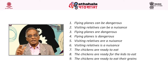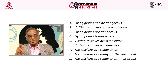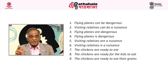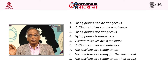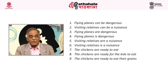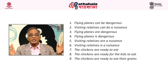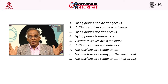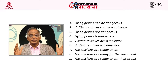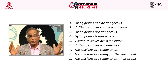Let's take another example: 'The chickens are ready to eat.' This sentence is also ambiguous — either the chickens are ready for someone to eat them, or the live chickens that are moving around are ready to eat their food. How can we make this sentence unambiguous? 'The chickens are ready for the kids to eat' — interpretation number one. 'The chickens are ready to eat their grains' — interpretation number two.